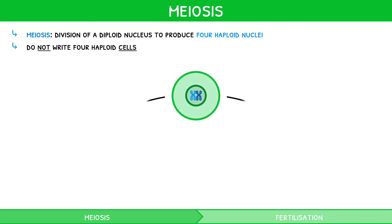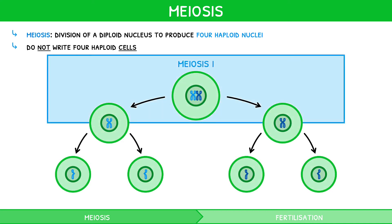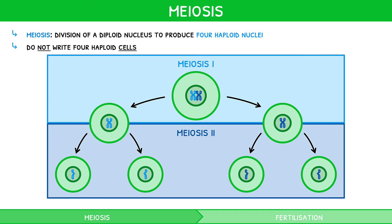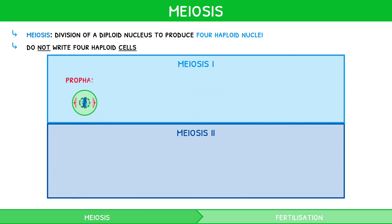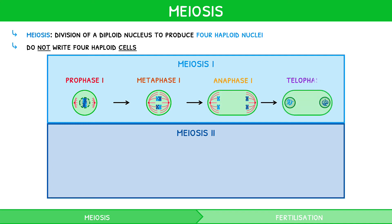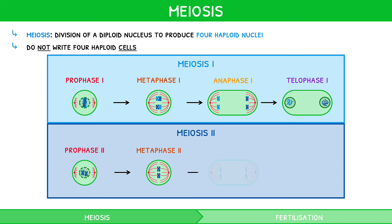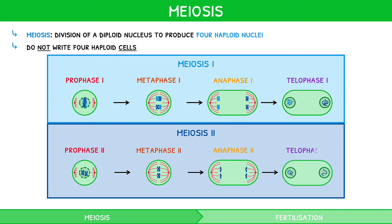Meiosis involves two divisions, called meiosis 1 and meiosis 2, each with four stages, giving a total of eight key stages. These, in order, are known as prophase 1, metaphase 1, anaphase 1, and telophase 1, followed by prophase 2, metaphase 2, anaphase 2, and telophase 2. You need to be able to describe in detail the events that occur in each of these sub-stages.